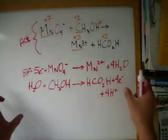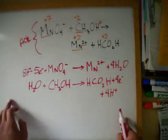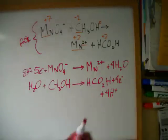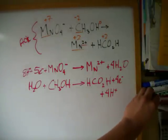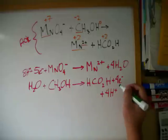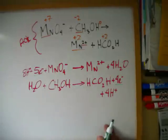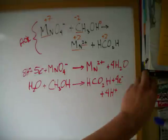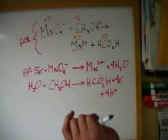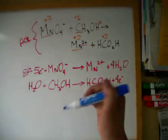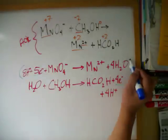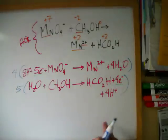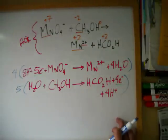Now that we're done with the half reactions, we have to make them into a whole reaction again. We can't add them if the electrons are different numbers — this one has four electrons and this one has five electrons. They have to equal each other. So we multiply: we multiply this whole half reaction by four and this whole half reaction by five, and then we're going to get the same number of electrons.